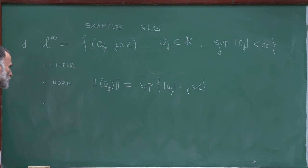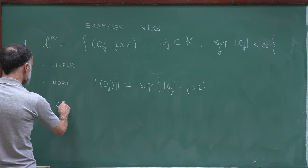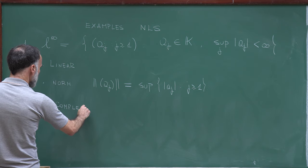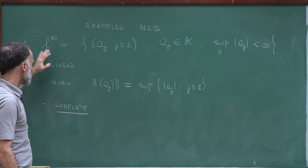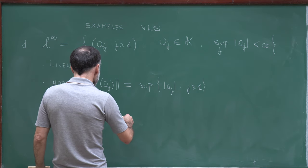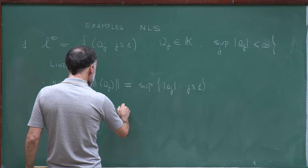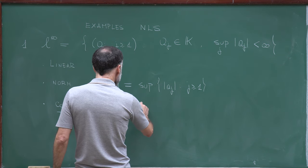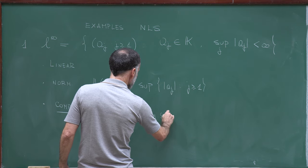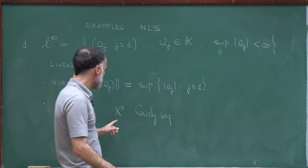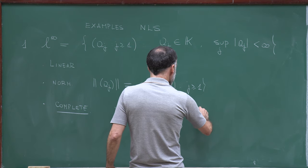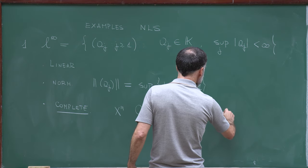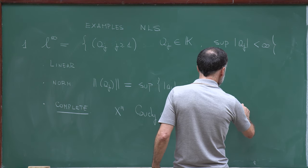What I will show is that this space is complete, and therefore that it is indeed a Banach space. To prove completeness, let me take a sequence xn which is Cauchy. Remember the notation: for each n, xn is itself a sequence, so xn is actually the sequence xn₁, xn₂, and so on. In my mind, when talking about a sequence of sequences, each line represents a sequence, and we have a sequence of lines.